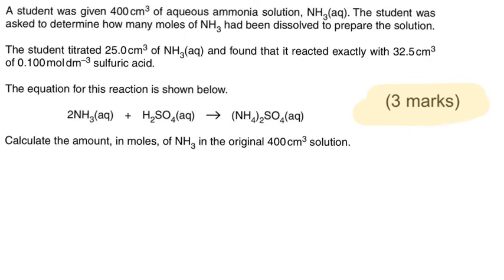Now, first off though, the marks are pretty much the same as last time but using a slightly different triangle. The student was given 400 cm3 of aqueous ammonia solution. The student was asked to determine how many moles of NH3 had been dissolved to prepare the solution. Not even a mass, just the moles. How many moles were used to make that solution of 400 cm3? The student titrated 25 cm3 and found that it reacted with this volume, 32.5 cm3 of sulfuric acid. The equation for this reaction is shown below. Now really for this question as well, what's nice about it, as with most titration questions, you don't actually need to look at this bit just here at all. You're just really concentrating on the ratio on the left hand side. And we can see that that is clearly two to one. Calculate the amount in moles of the NH3 in the original 400 cm3 solution.